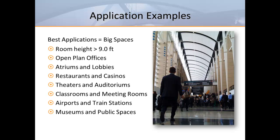When thinking of displacement ventilation, big spaces are absolutely the best applications. Any spaces with room heights greater than 9 feet and enough open floor space to allow the proper air pattern to develop should be ideal. If the space will be occupied by moving people, like visitors to a museum or travelers walking to a departure gate, that's also ideal because the adjacent zone shouldn't be an issue.